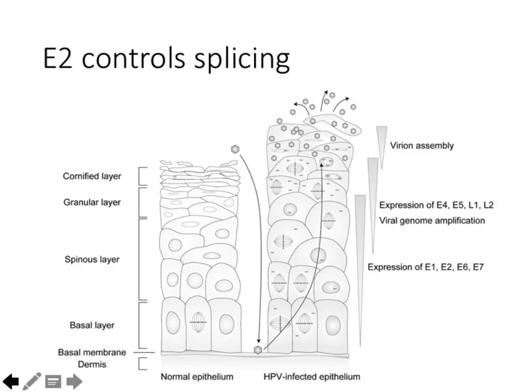Later on in the process, there's basically an explosion of replication. At that point, host replication has pretty much ceased, but the virus is still encouraging synthesis of the viral genome. E2 functions in part as a transcription factor by binding to the URR or LCR region where the promoters are located, and it also functions as a splicing factor. There's quite a bit about E2 that we still don't know about.